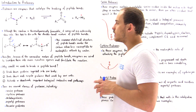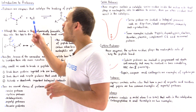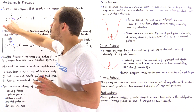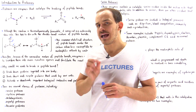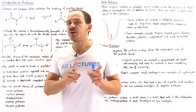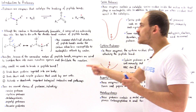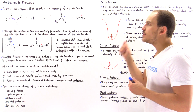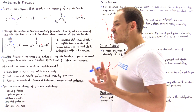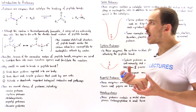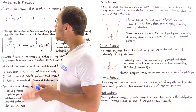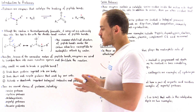Proteases, as we'll see in the next several lectures, actually make water a much better nucleophile and make the carbon a much better electrophile. They make these reactants much more reactive, facilitating the hydrolysis reaction. We can categorize proteases into five categories.